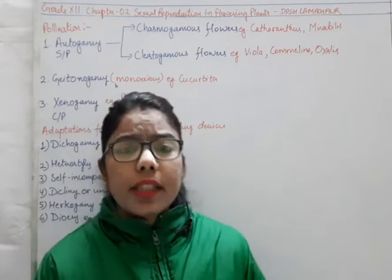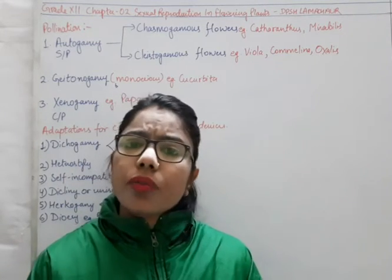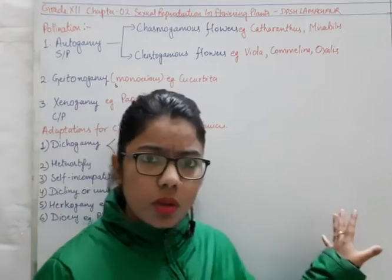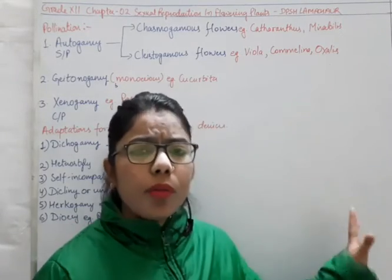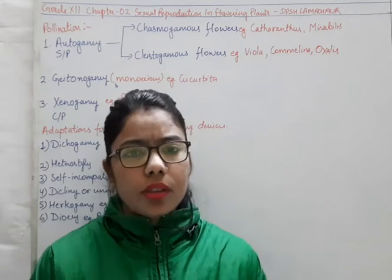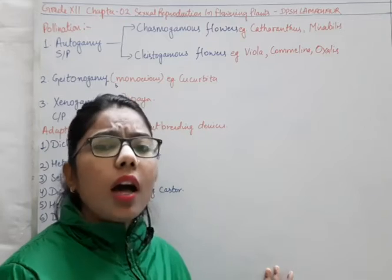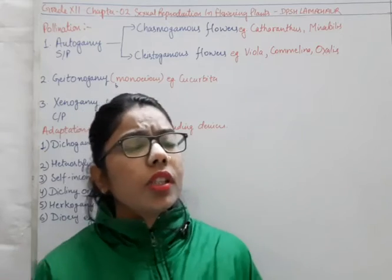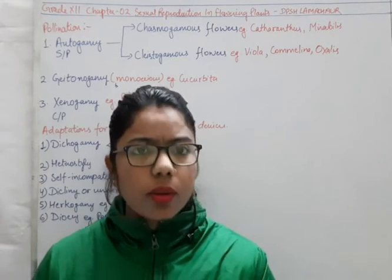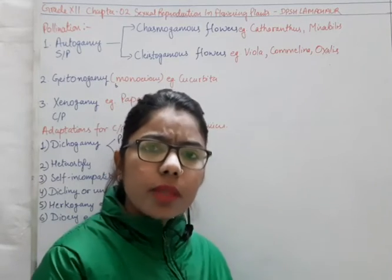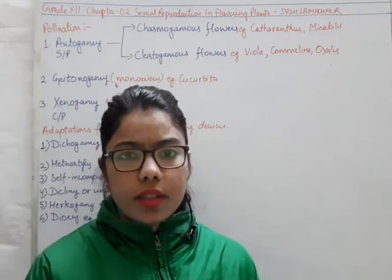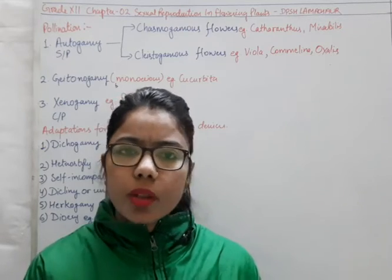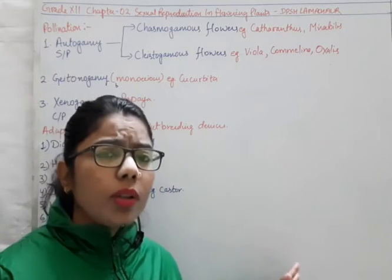Now comes the fertilization events. We have seen how we get the two gametes. For fertilization, there must be a presence of two gametes. Before that, there is pollination — because in plants, fertilization takes place with the help of pollination. Pollination is the transfer of pollen to the stigma of the flower with the help of different agents: wind, water, animals, or any insects.